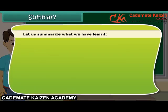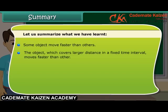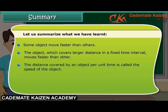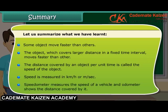Let us summarize what we have learned. Some objects move faster than others. The object which covers a larger distance in a fixed time interval moves faster than others. The distance covered by an object per unit time is called the speed of the object. Speed is measured in kilometer per hour or meter per second. Speedometer measures the speed of a vehicle and odometer shows the distance covered by it.